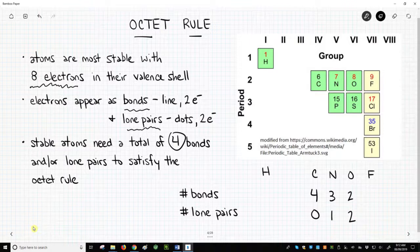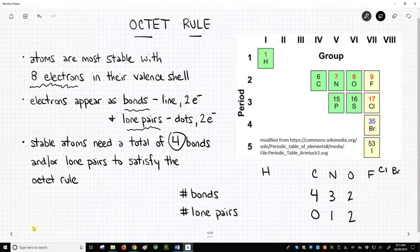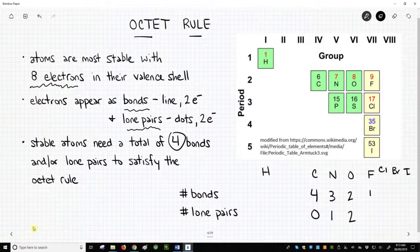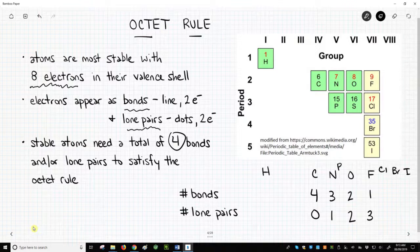All the halogens – fluorine, chlorine, bromine, iodine – will have just one bond and three lone pairs. Phosphorus behaves just like nitrogen. Sulfur is just like oxygen – two bonds and two lone pairs.